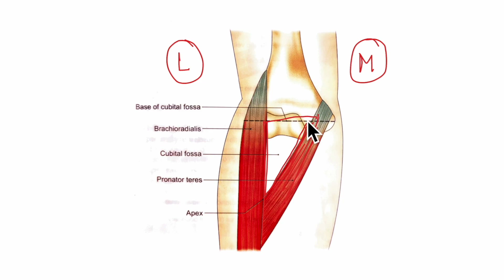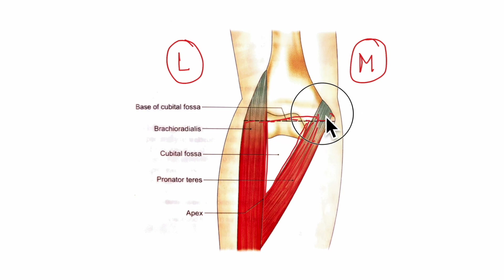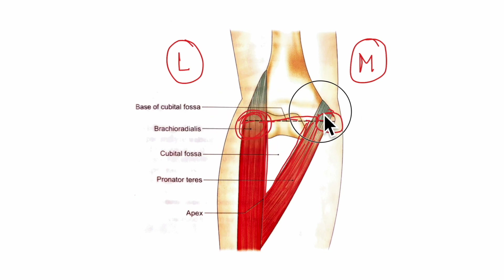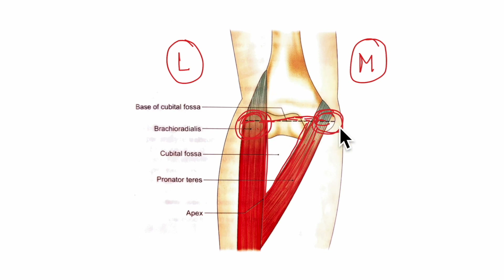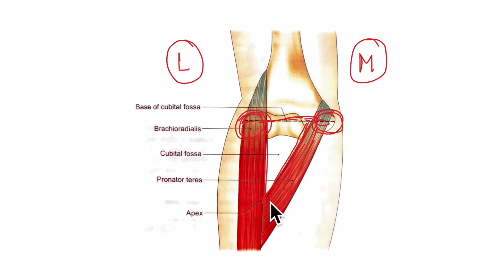Looking at the base, it is directed upwards and is represented by an imaginary line joining the front of the two epicondyles of the humerus — the lateral epicondyle and the medial epicondyle. The apex is directed downwards and is formed by the area where the brachioradialis crosses the pronator teres muscle.